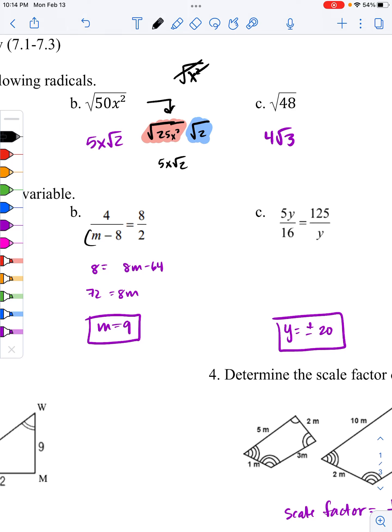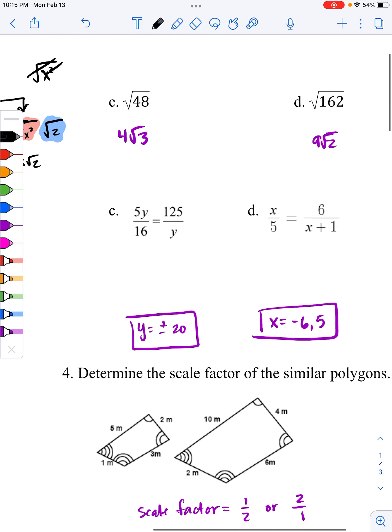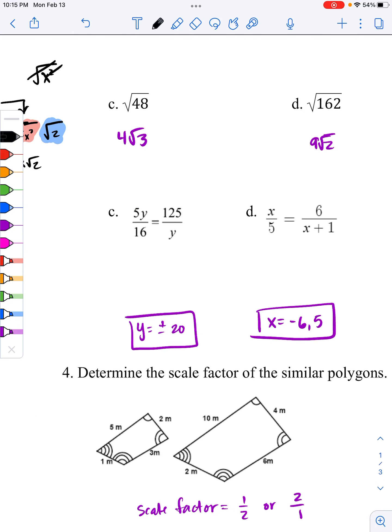if you remember, when you cross multiply, this has to have parentheses. Any time you have addition or subtraction in the numerator or denominator of a rational value of a fraction, that should have a parentheses, especially if it is a proportion problem, which these are. So when you cross multiply this, this is really 8 times m minus 8. So that's how you get 8m minus 64. The rest of the work is there, you should be able to do that.